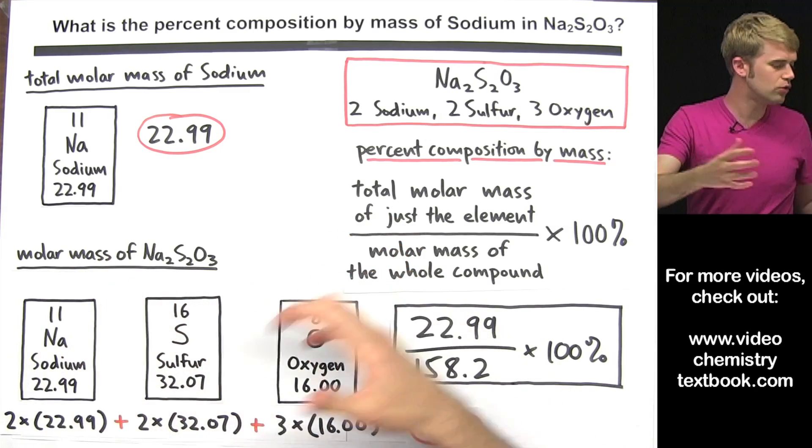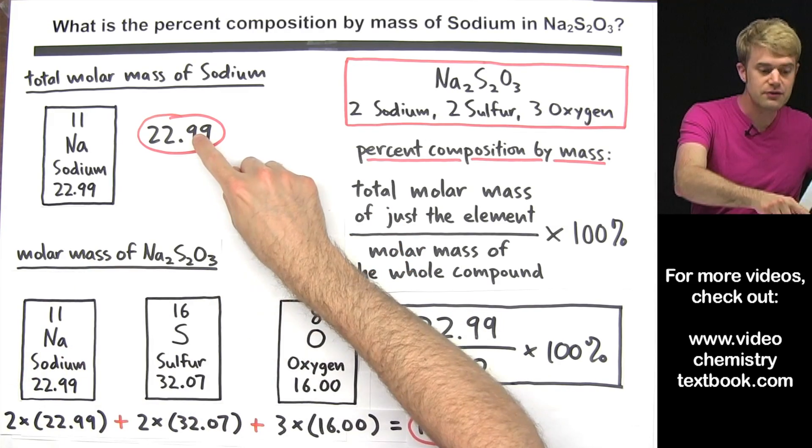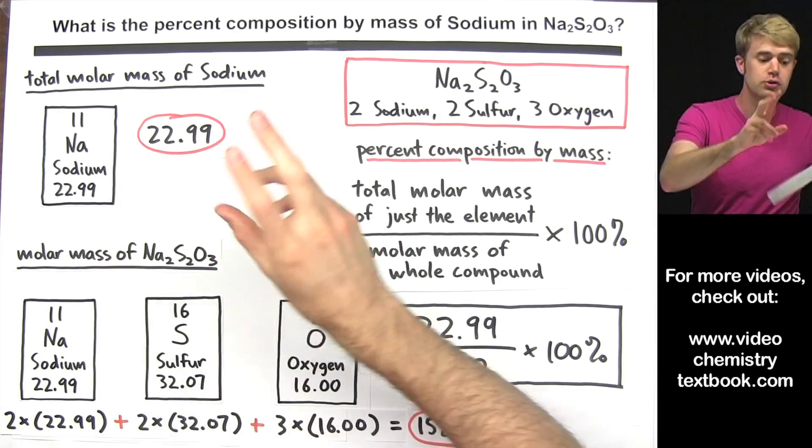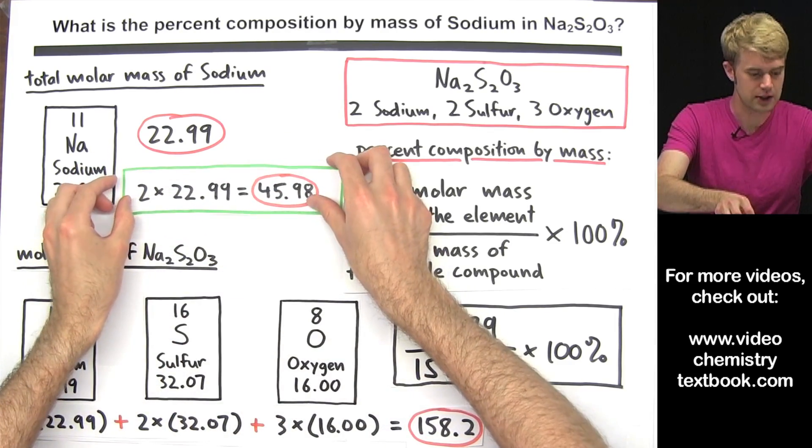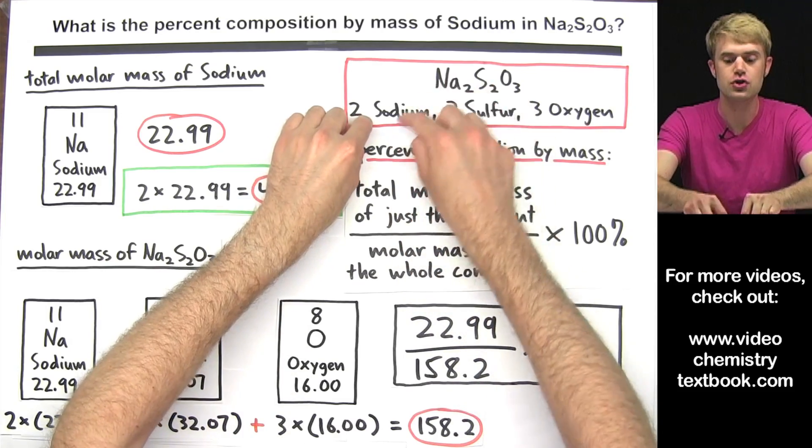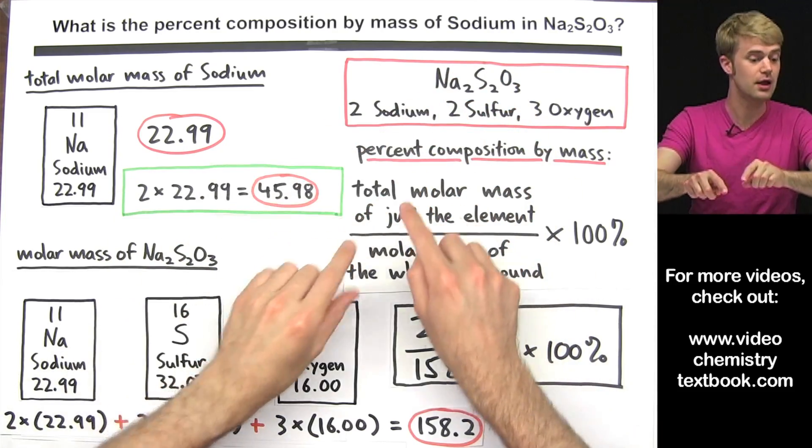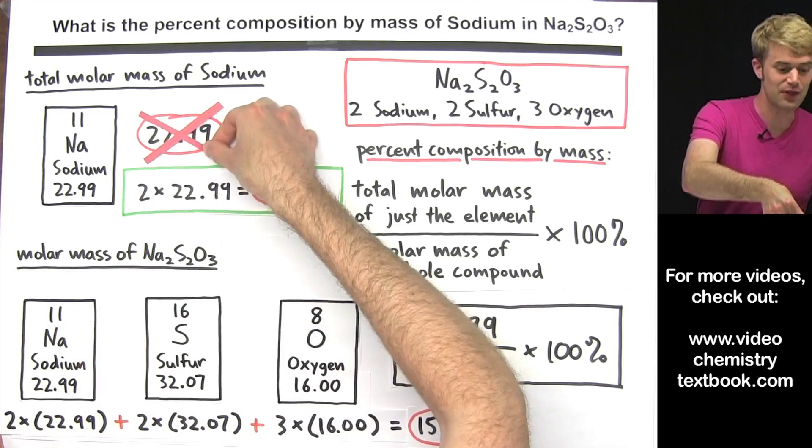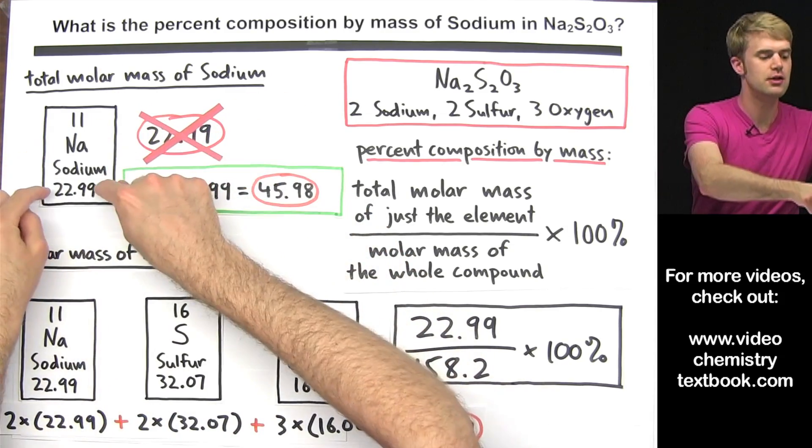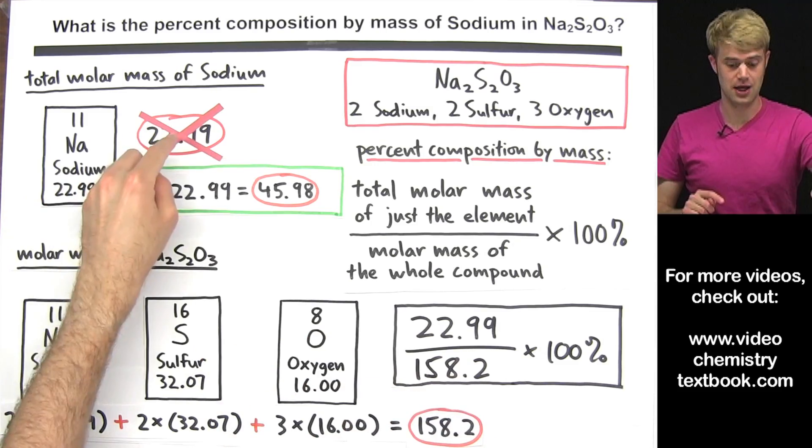So to get the total molar mass of the sodium we have to take this number and multiply it by two. So this is the correct way to do the calculation taking into account the two sodiums that are in the formula and multiplying this number by two. This is not the right way to do it where you just take the number from sodium right off the periodic table.